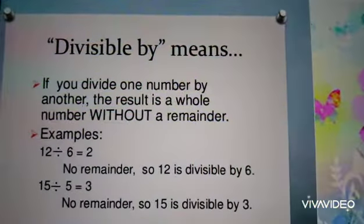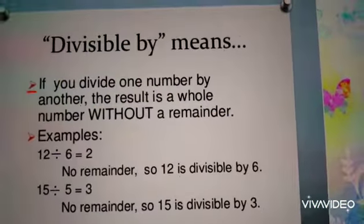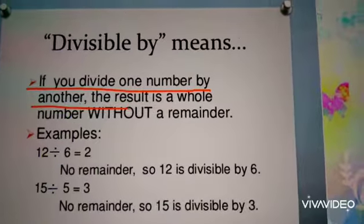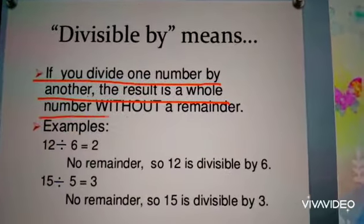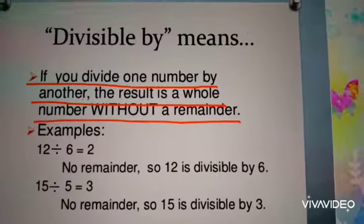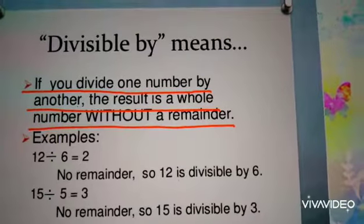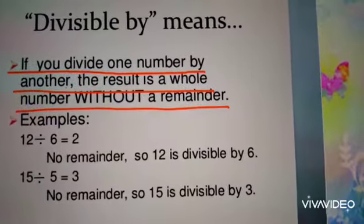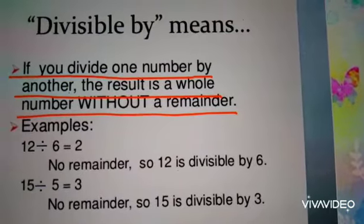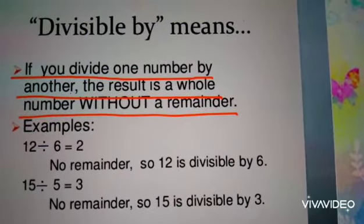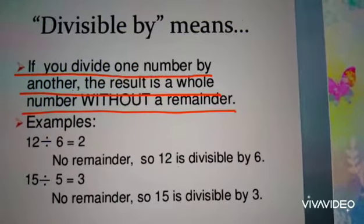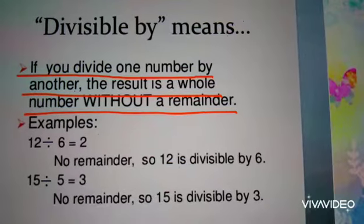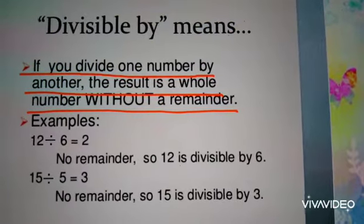Divisible by: if you divide one number by another, the result is a whole number without a remainder. For example, when we divide 12 by 6, the answer is 2. There is no remainder, so 12 is divisible by 6. And when we divide 15 by 5, the answer is 3.